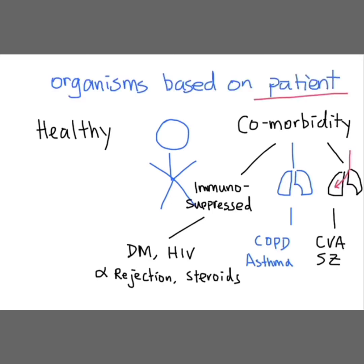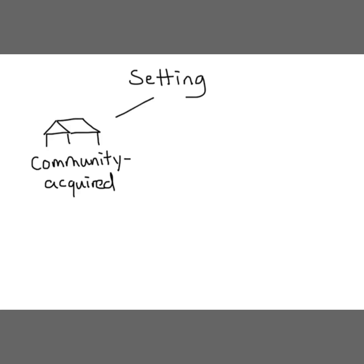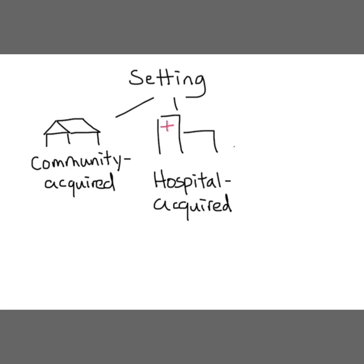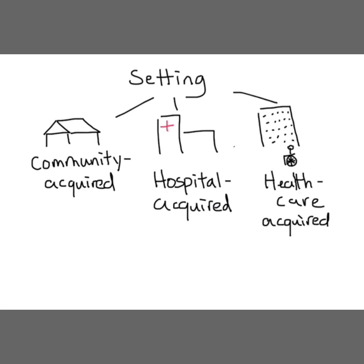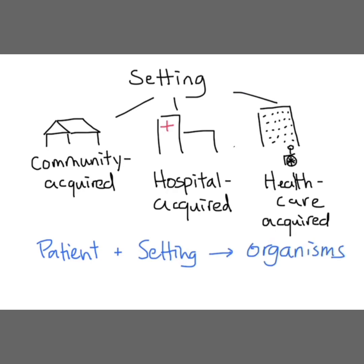The second part of the equation has to do with the setting — where did the patient acquire this pneumonia. Broadly, it is divided into community acquired, meaning patients live independently in their own home and are not exposed to other sick people; hospital acquired, meaning the patient picks up the infection from a hospital setting; and lastly, healthcare acquired, for patients living in long-term healthcare facilities such as nursing homes.